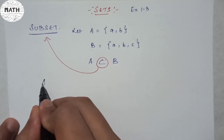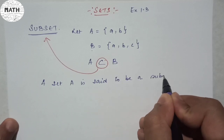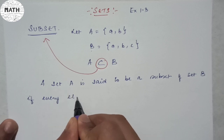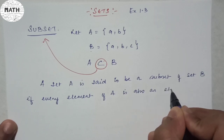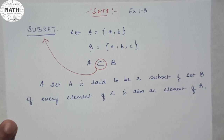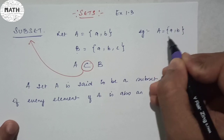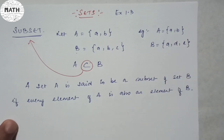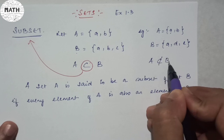As a definition, you can say that a set A is said to be a subset of set B if every element of A is also an element of B. And we define subset with this sign. Suppose A is equal to {a, b} and B is equal to {a, d, e}. Can you say A is a subset of B? There is 'a' but there is no 'b'. So A is not a subset of B.